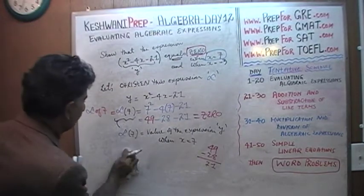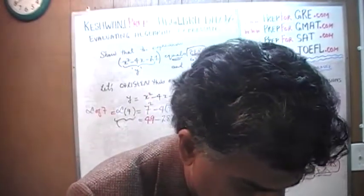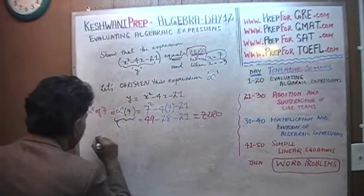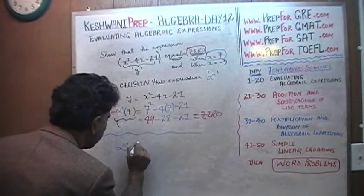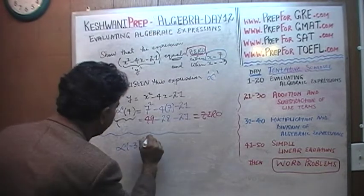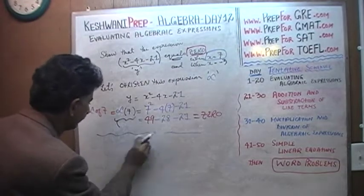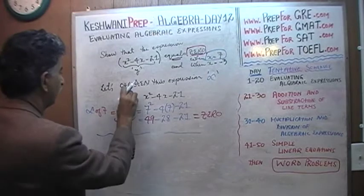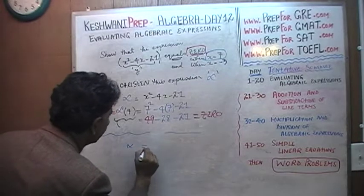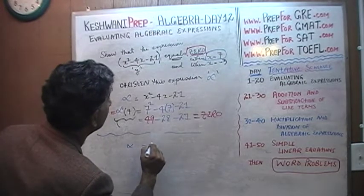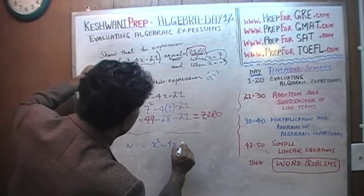Now let's show that in a different color. We're going to show that alpha of negative 3 also equals 0. So first let's put down the expression. Alpha equals x squared minus 4x minus 21.